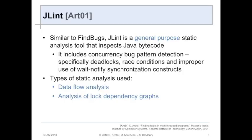The second tool we used was JLint. Like FindBugs, it's a multi-purpose tool, but it does find some concurrent software bugs. Specifically, it detects data race conditions and notify synchronization issues. The type of analysis it uses is data flow analysis, and it does analyze lock-dependency bugs.